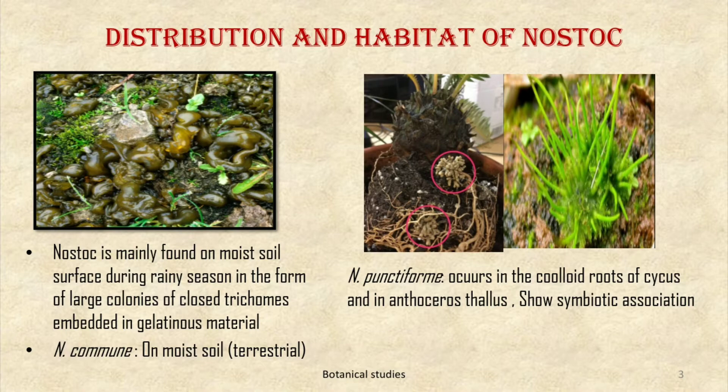Let us see the distribution and habitat of Nostoc. Nostoc is mainly found on moist soil surface during rainy season in the form of large colonies of closed trichomes embedded in gelatinous material. Nostoc shows slight variation in their habitat. For example, Nostoc commune is found on moist soil surface, showing a terrestrial habitat.